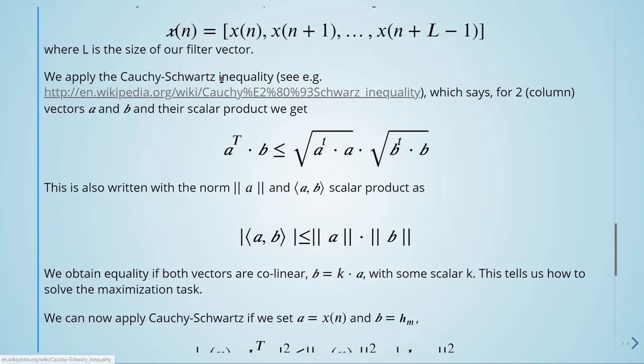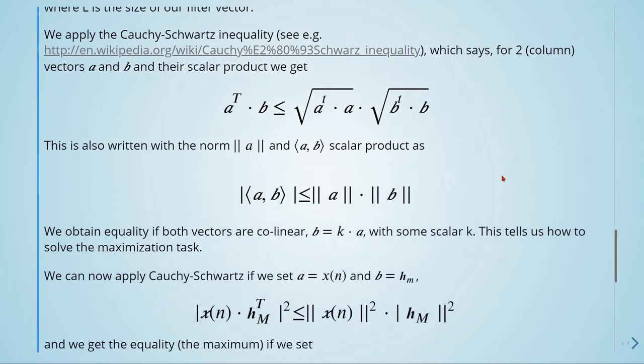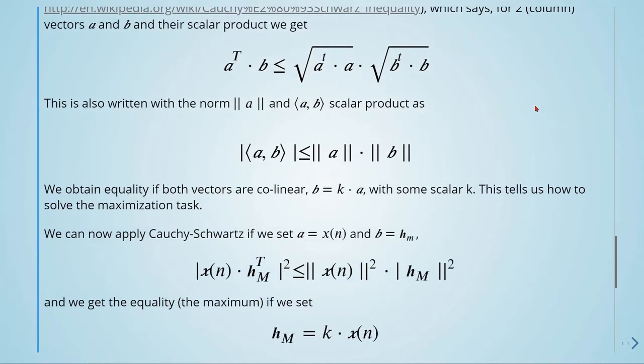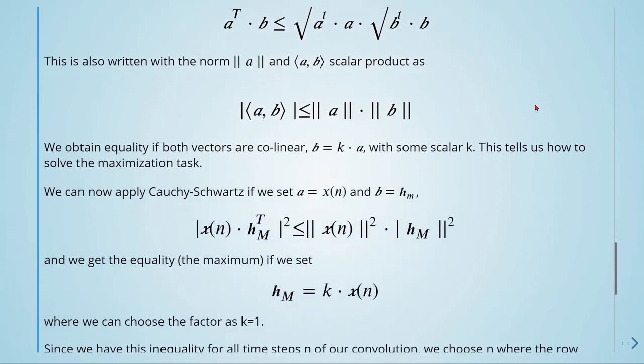We then apply the Cauchy-Schwarz inequality, which says for two column vectors A and B, their scalar product, we get this here. This is also written with the norm A and the AB scalar product like this. This is equivalent to this. We obtain equality if both vectors are collinear, so B equals K times A with some scalar K, and this tells us how to solve the maximization task.